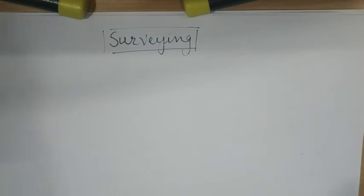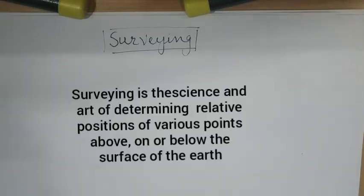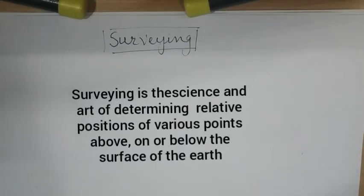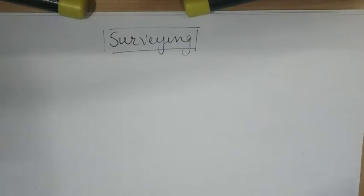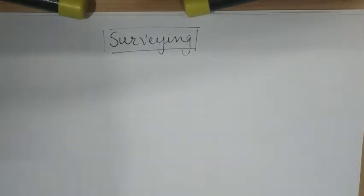The first question arises: what is surveying? Surveying is the science and art of determining the relative positions of various points above, on, or below the surface of the earth. The relative positions are determined by measuring horizontal distances, vertical distances (called elevations), horizontal angles as well as vertical angles accurately using various surveying instruments.